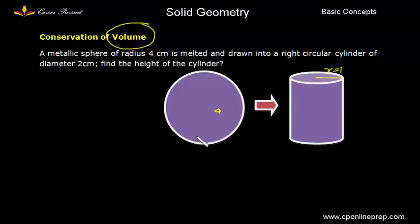Volume of sphere is 4 by 3 pi r cube and volume of cylinder is pi r square h. Here the radius will be different. The radius of sphere is given as 4 and the radius of cylinder is 1. So volume of sphere would be 4 by 3 times pi into r cube, 4 cube. This would be equal to pi into radius of the cylinder which is 1 square into height. So pi and pi being common will get cancelled out.